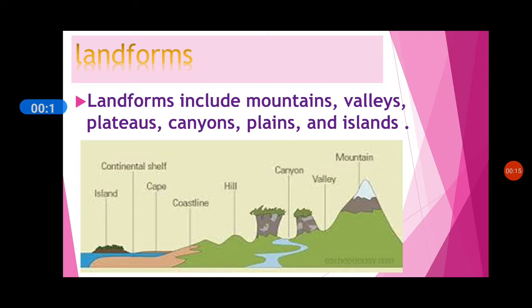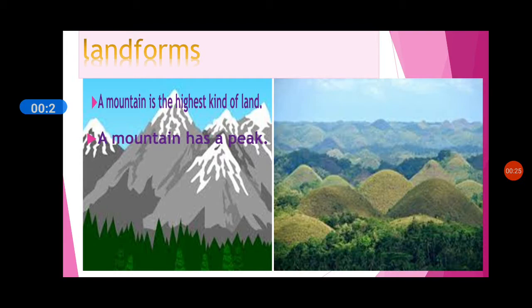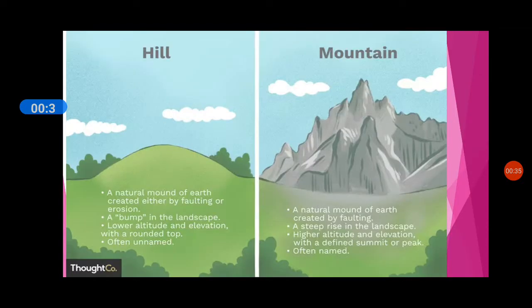A mountain is the highest kind of land and has a peak. Hills are mound shapes and they don't have peaks. The difference is seen in these two pictures — hills don't have peaks, mountains have peaks.